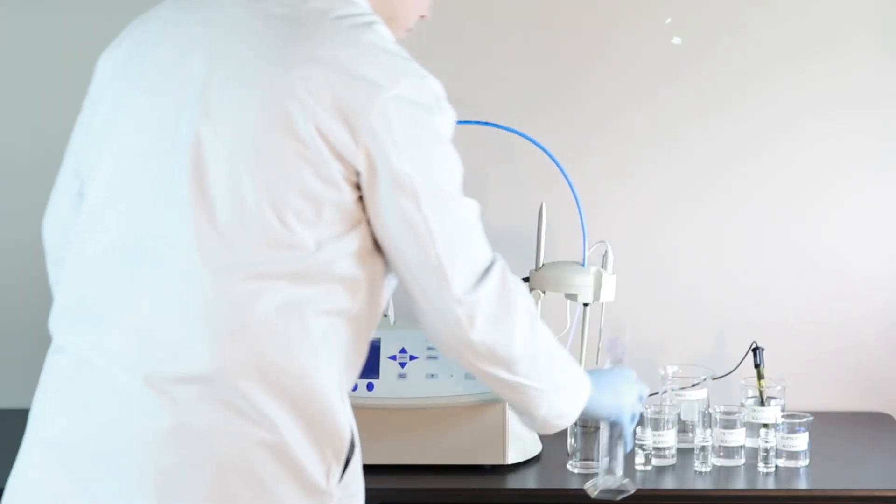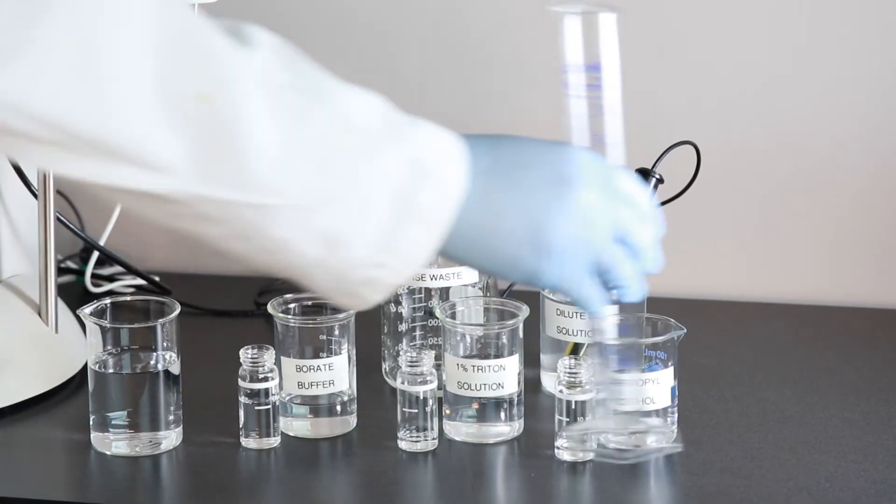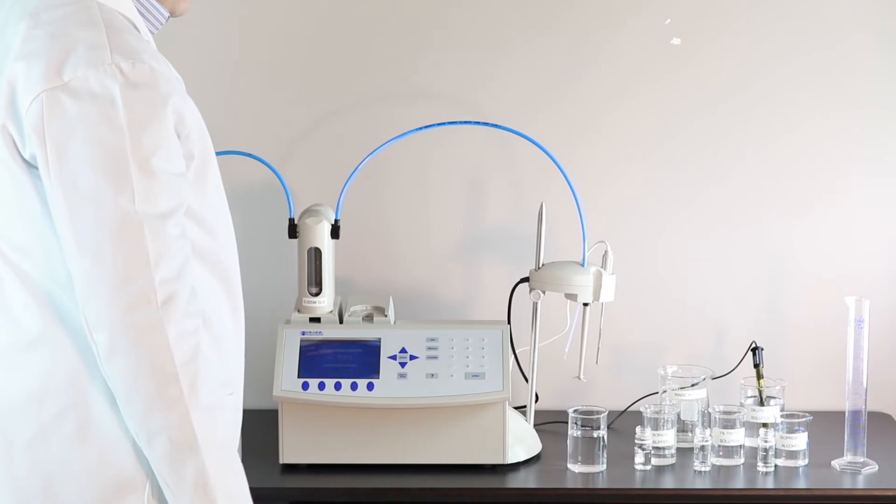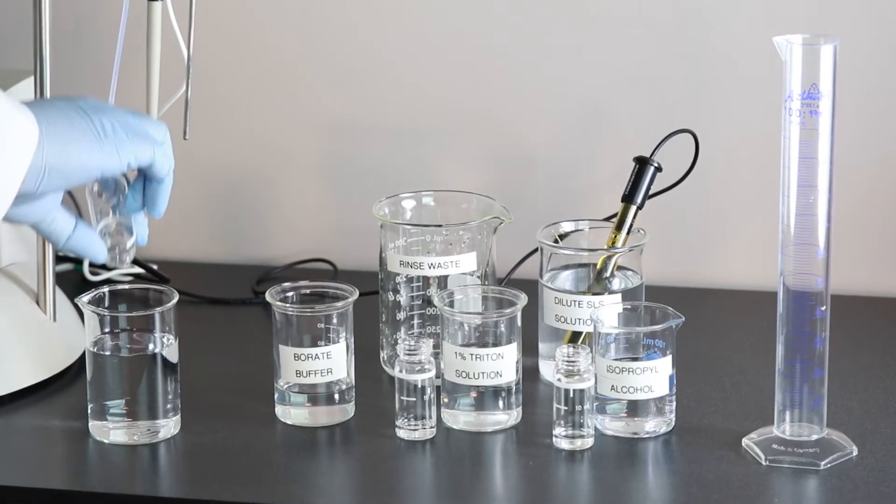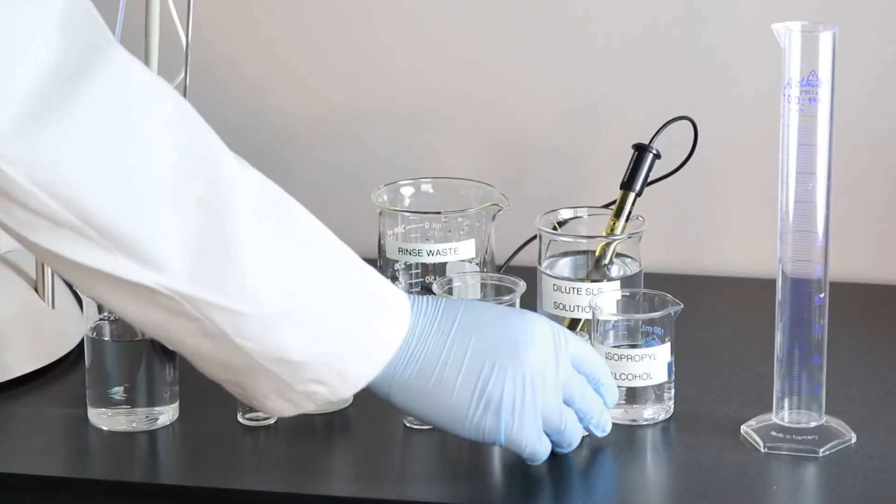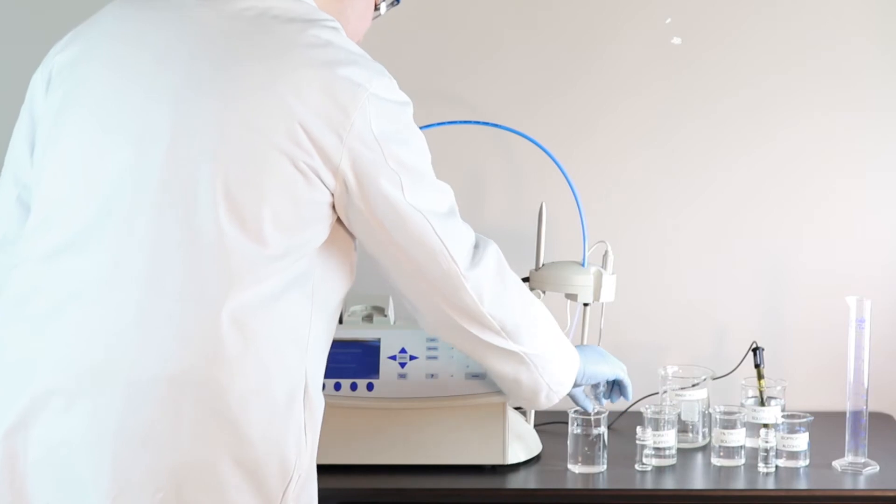I've already weighed out our surfactant sample into a beaker, and to that, we're going to add about 100 milliliters of deionized water. We want to make sure we have enough volume in the beaker to submerge our electrode. Now, I'll add 10 milliliters of pH-adjusted borate buffer solution, then 2 milliliters of isopropyl alcohol, and finally, 2 milliliters of 1% triton solution.